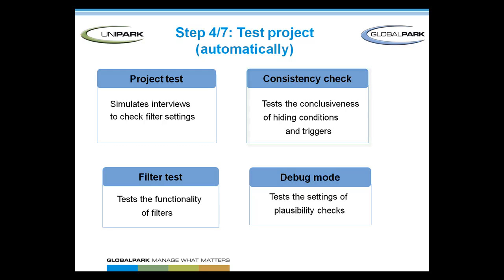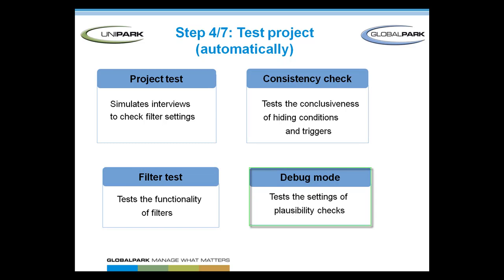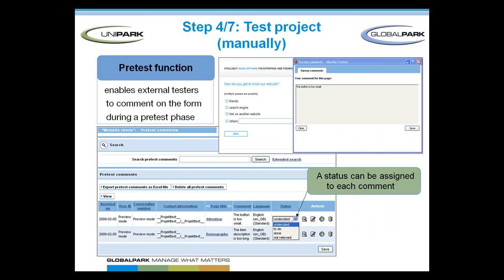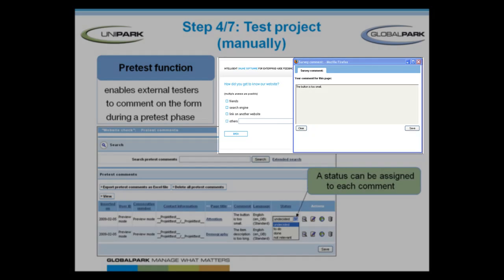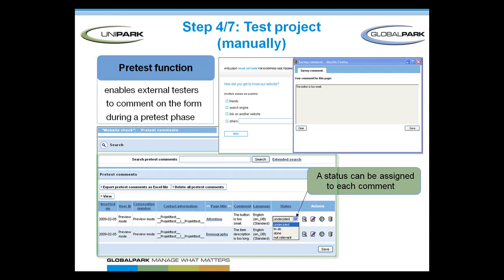Other automatic test features are the consistency and filter check and the debug mode. Basically, they test the consistency of filters, hiding conditions, triggers, and plausibility checks. A very popular manual test feature is the pre-tester tool, which allows you to conduct pre-tests so chosen testers can comment on your questionnaire by means of comment fields on every single page. The pre-tester tool captures the testers' comments systematically and enables you to assign a processing status to each comment.